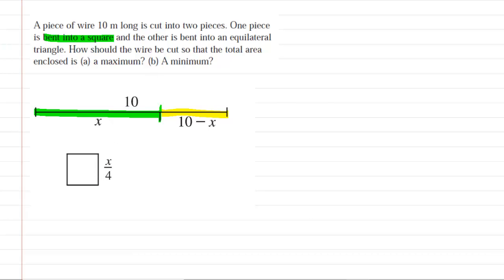The equilateral triangle that is formed by the other piece of the wire, the yellow piece, is a little more challenging to draw. So let's take a moment to do that. Here is that equilateral triangle.